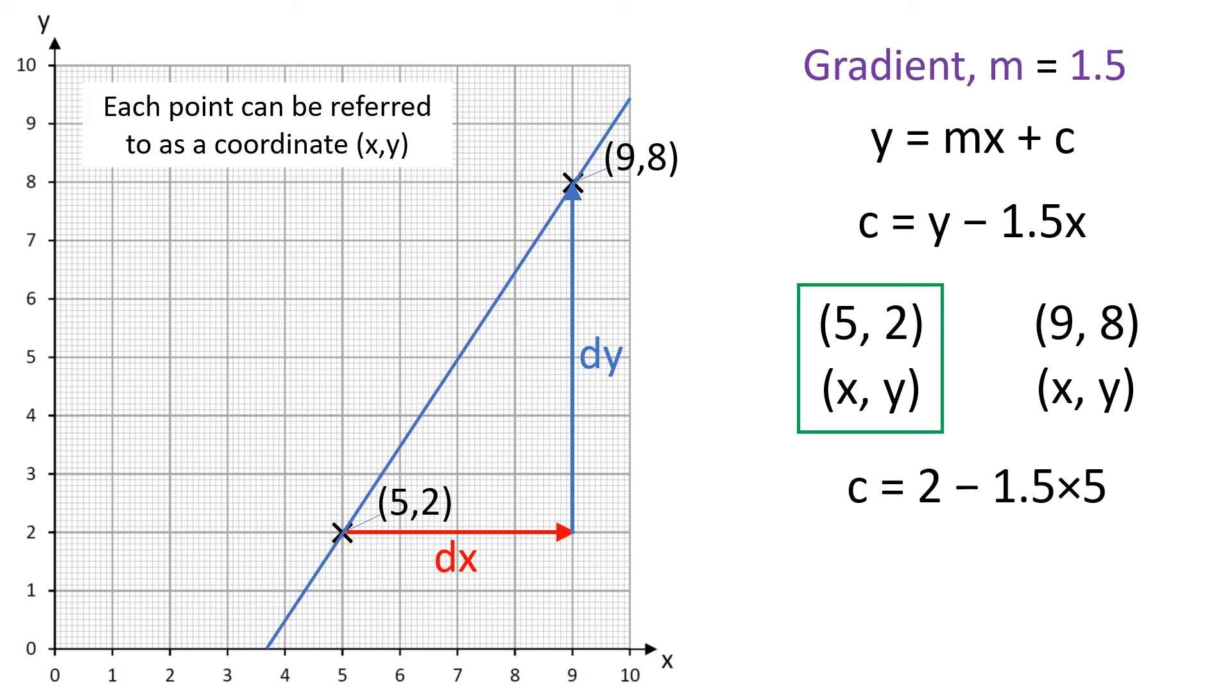So we have c equals 2 minus 1.5 times 5. That gives us an intercept of minus 5.5. We could have chosen either point to do this with, and both of them would give us the same intercept. So overall we have the equation y equals 1.5x minus 5.5.